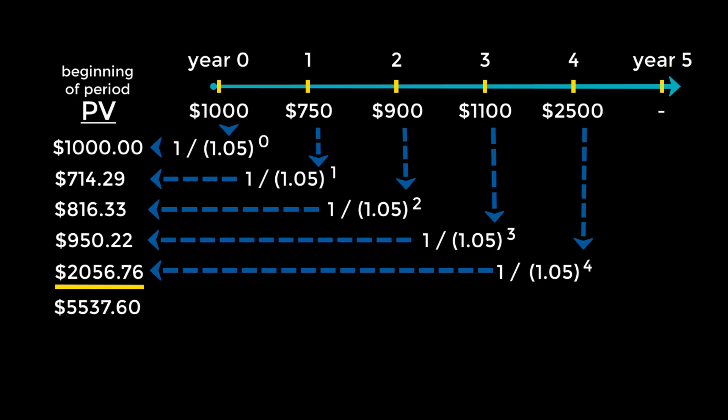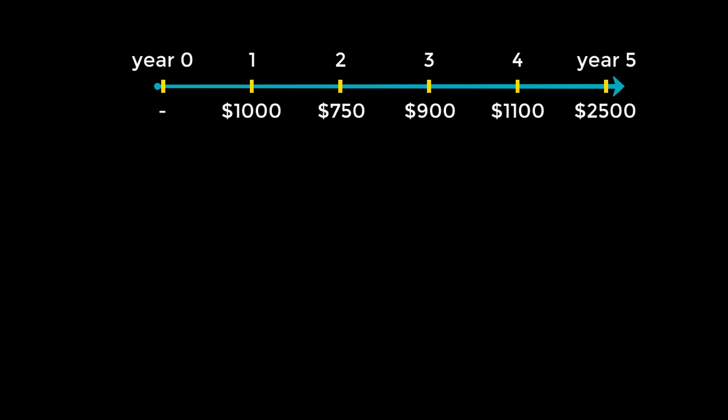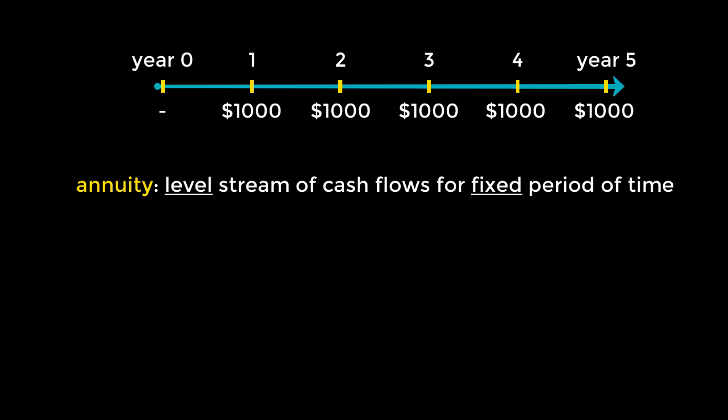In this example, each payment was a random and uneven amount, but there are a significant number of transactions that involve a fixed number of even payments. For example, $1,000 every year for 5 years. What we're looking at here is called an annuity. When the cash flows occur at the end of each period, it's called an ordinary annuity. When they occur at the beginning of each period, it's called an annuity due.